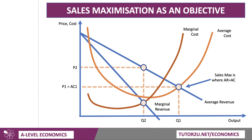And at this output Q2, the price we're charging is P2. There's the average cost per unit, AC2, and therefore the firm can make high levels of supernormal profit, which is shaded in green in the diagram.